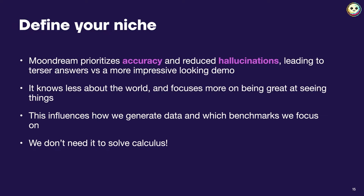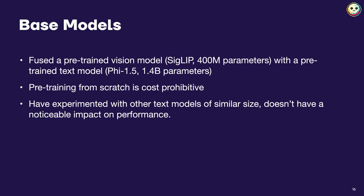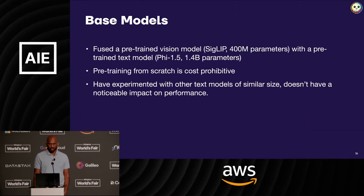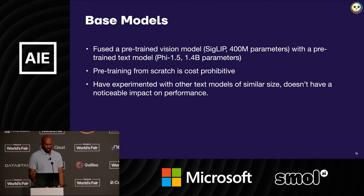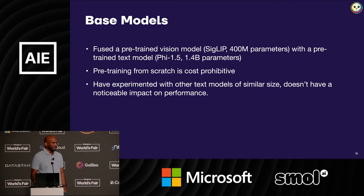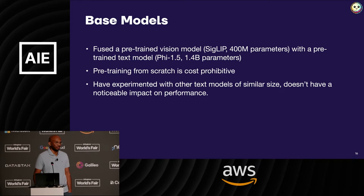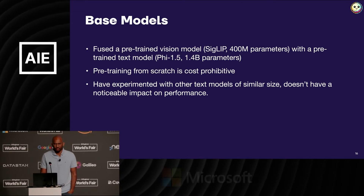There's a popular vision language model benchmark called MathVista, which measures how good models are at solving math problems — you take a picture of a differential equation and see whether the model can solve it. That was an example of a non-goal for us because we just want the model to be good at looking at images. The most we do is probably generate a LaTeX representation of the problem. It was not pre-trained from scratch. We use a vision encoder called SigLIP from Google with a pre-trained text model called Phi 1.5 from Microsoft. Phi 1.5 is also trained on mostly synthetic data, which is very similar to our pipeline. For this sort of task, pre-training from scratch doesn't really make a difference and it is cost prohibitive. So unless you want those brownie points for saying you trained it from scratch, it's probably not worth doing. We experimented with a bunch of different other models as they were released, and nothing really made too much of a difference.